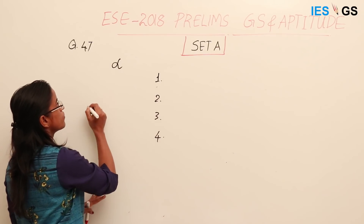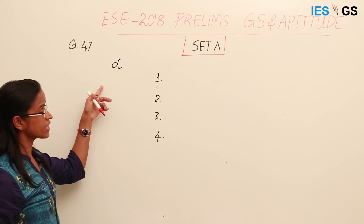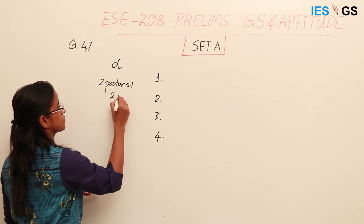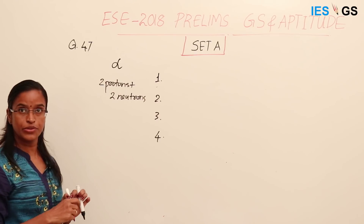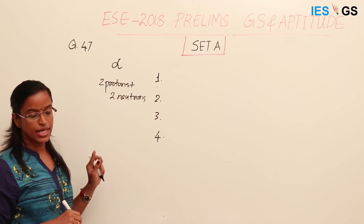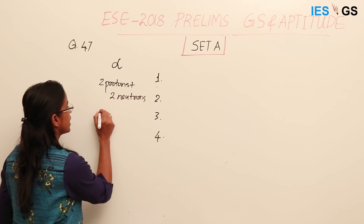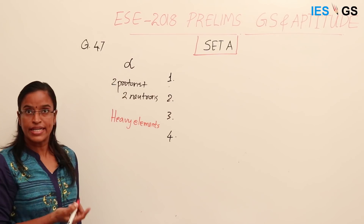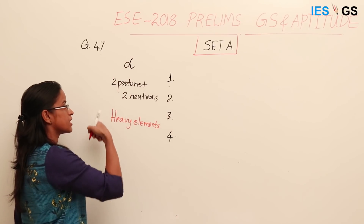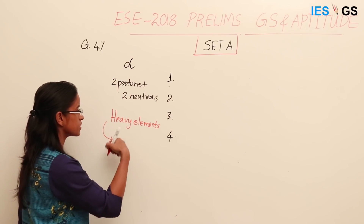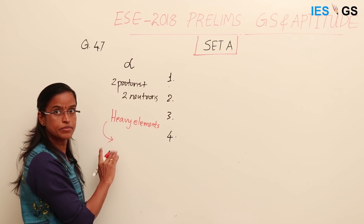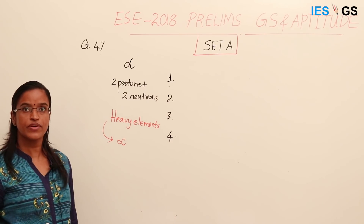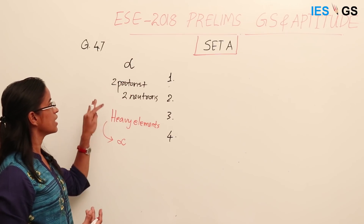Alpha particles are radioactive particles having 2 protons and 2 neutrons, so they are like a helium nucleus. These are produced from heavy radioactive elements like uranium, which naturally decay. During this process, the heavy elements change into elements with lesser mass, releasing radiation in the form of alpha, beta, and gamma radiations. Alpha is the heaviest.